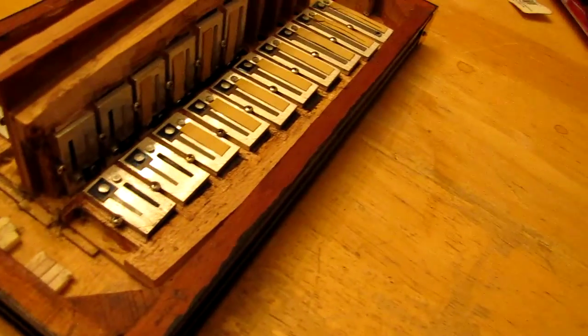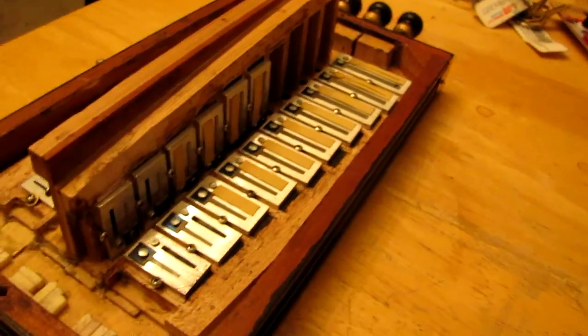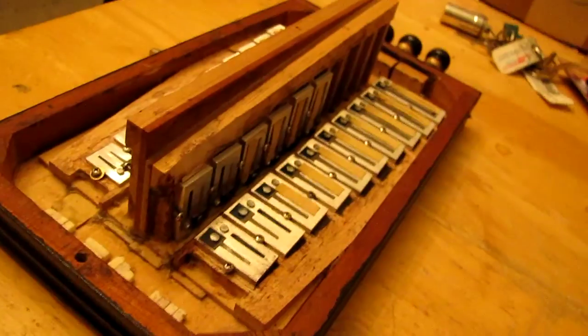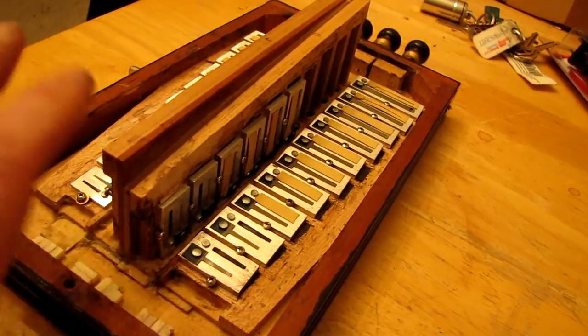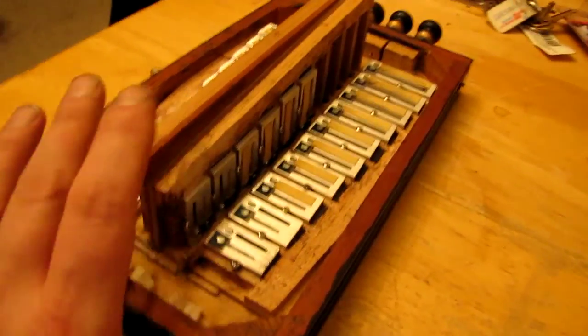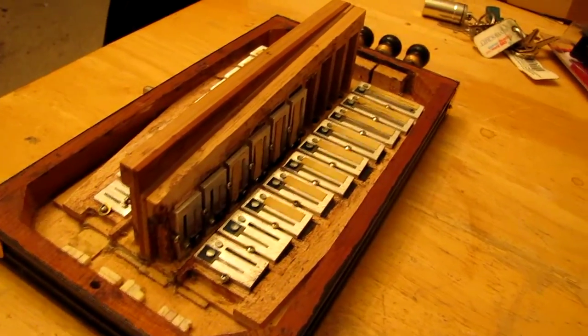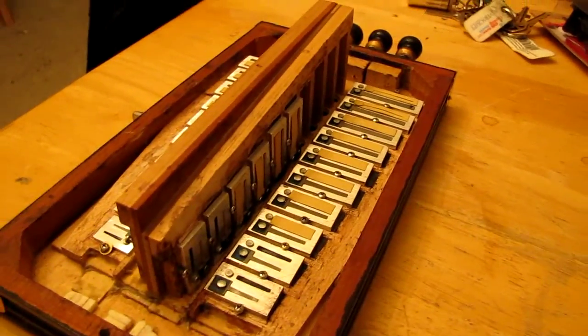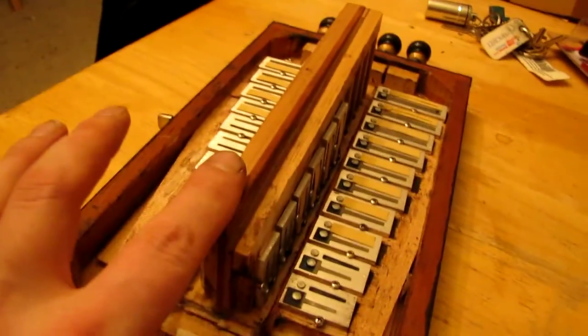It's one of the hardest woods on the planet, one of the most dense woods. By luthiers and guitar makers, it's considered the holy grail of tone woods. Now when an accordion plays, the reeds vibrate and the wood doesn't. It's not like a guitar where the strings make the wood vibrate. However, what you make your reed blocks out of makes a difference.